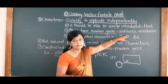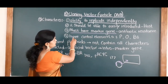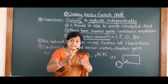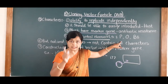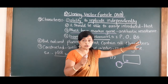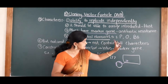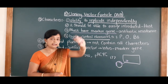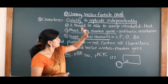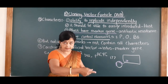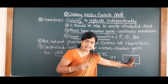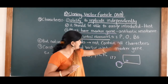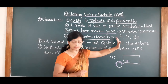The fourth characteristic: vectors should have control elements inside, as they have to replicate. They should have these specific sites — for example, they should have a promoter site, they should have an operator site, and they should have a ribosomal binding site. These sites should be there in the vector. So these are the four characters which should be there in a vector.